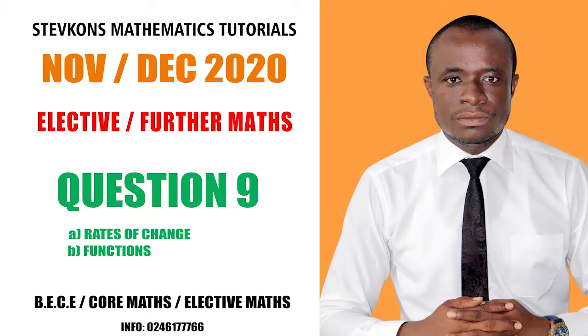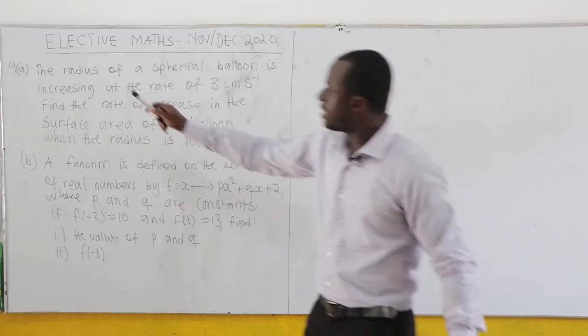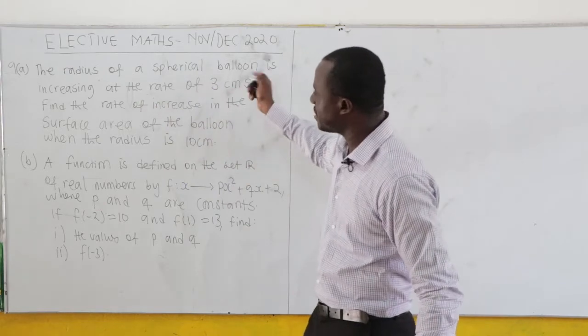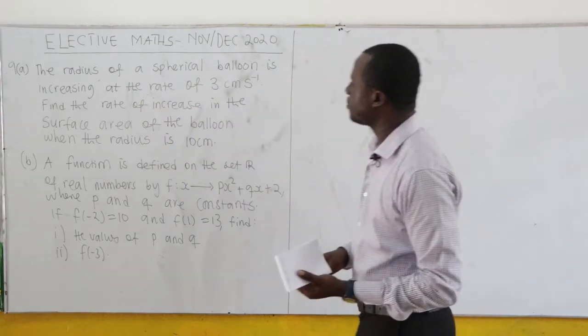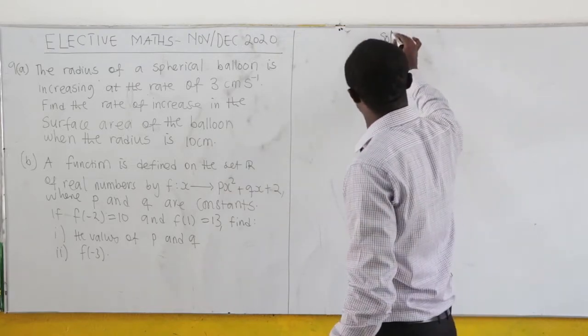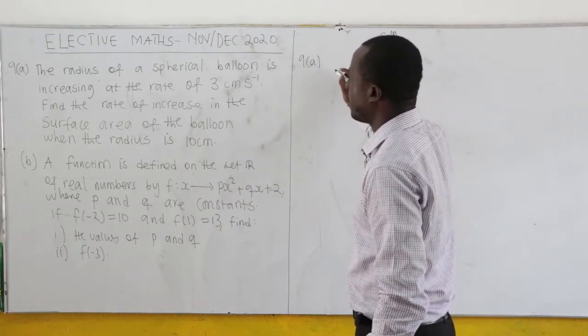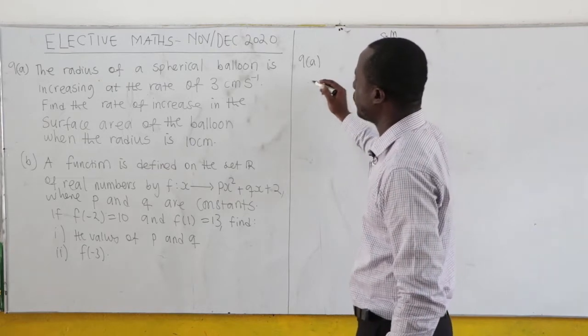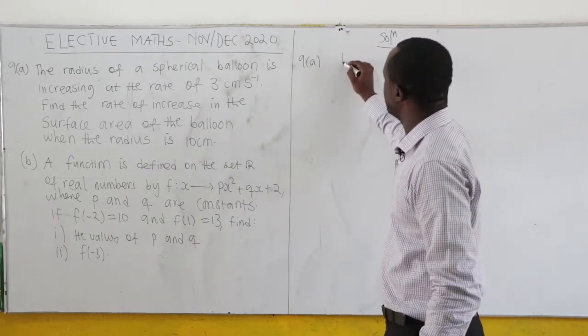November/December 2020 question 9a: The radius of a spherical balloon is increasing at the rate of 3 cm per second.